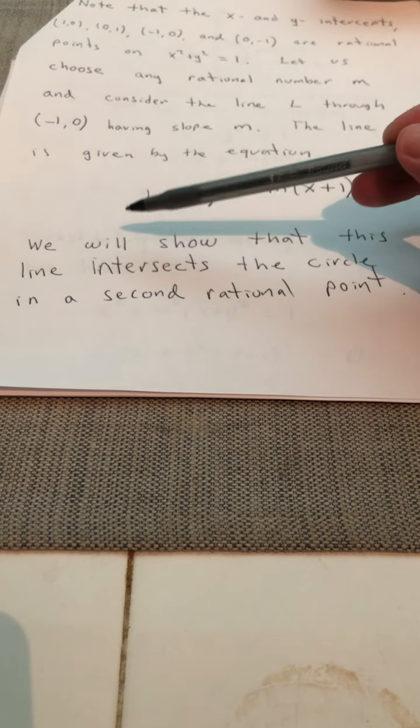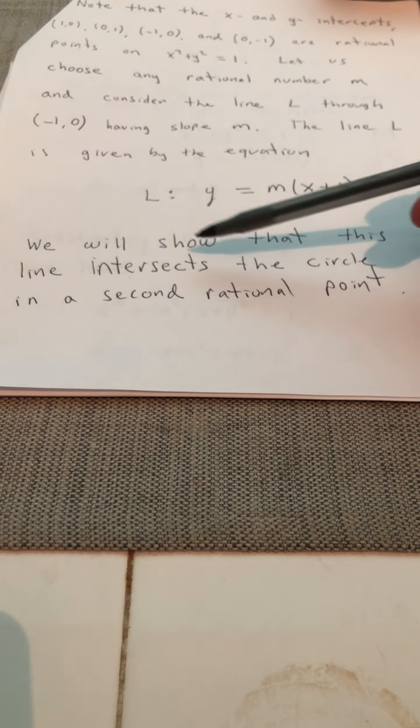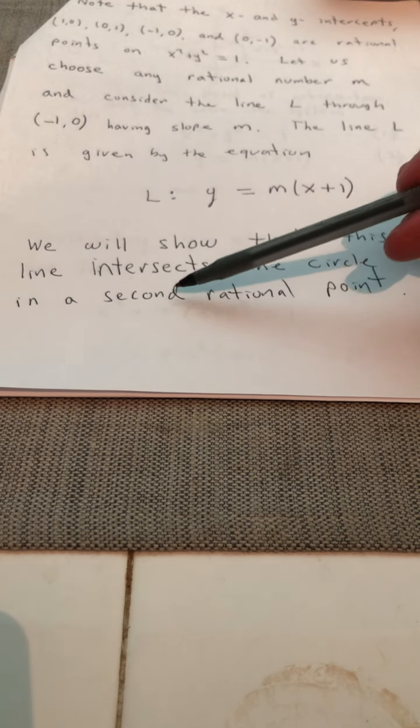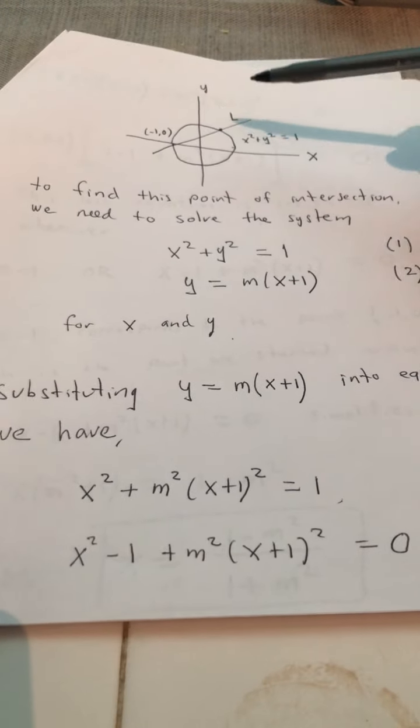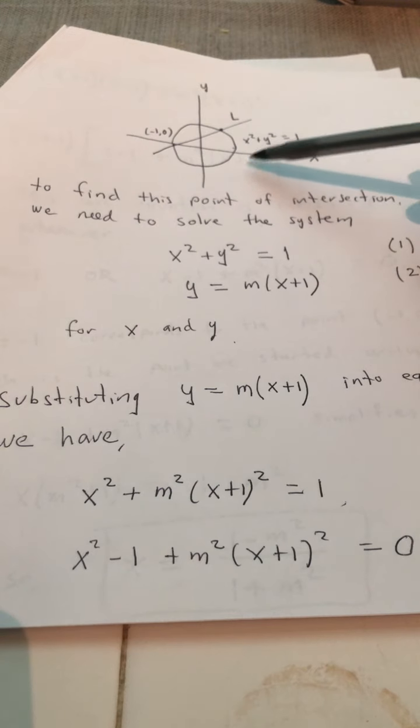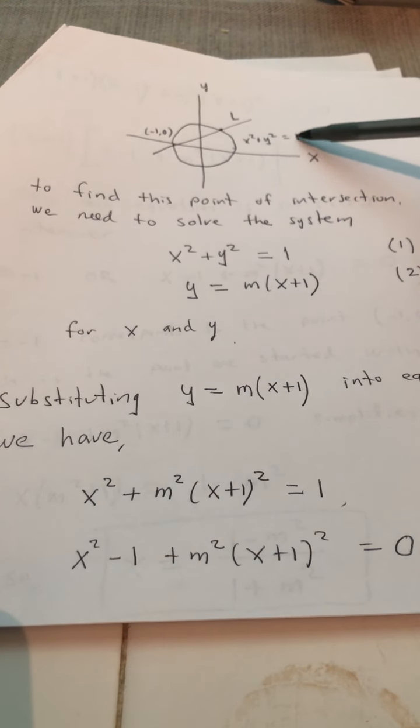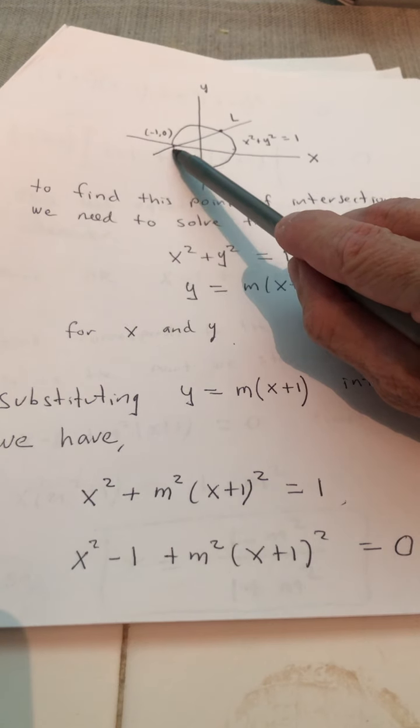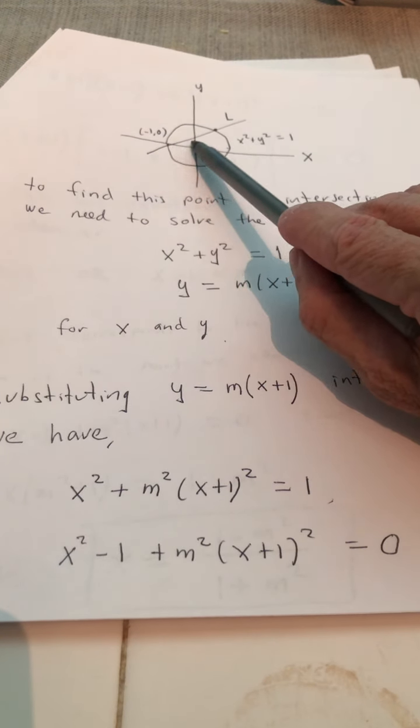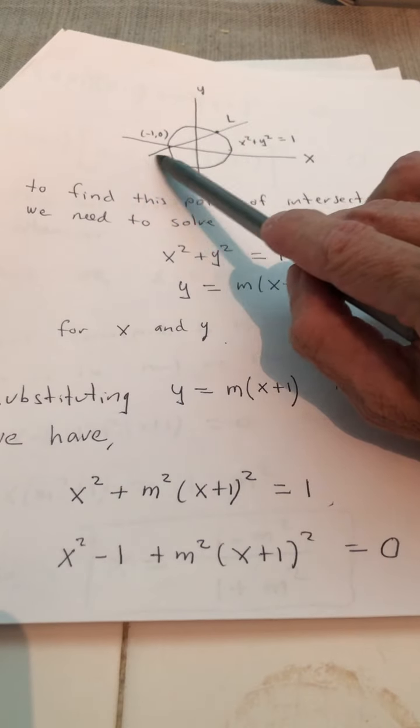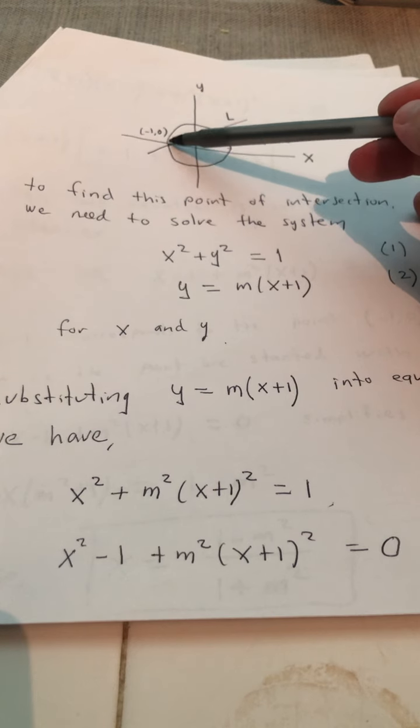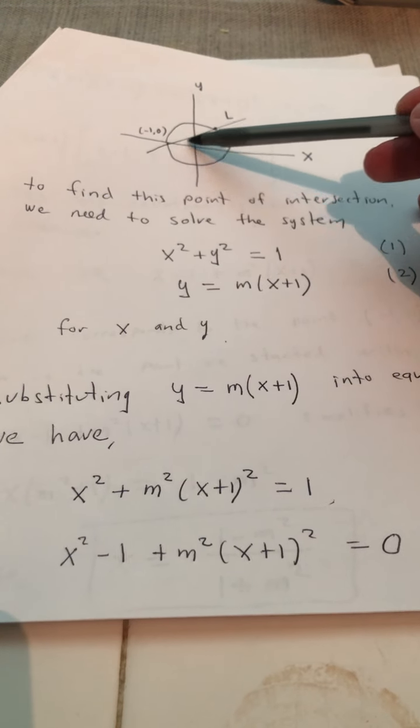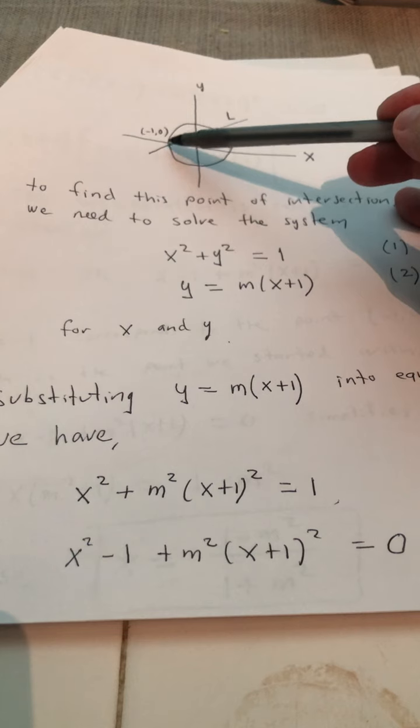So we will now show that this line intersects the circle in a second rational point. So it's helpful to draw a graph. So this is the unit circle x squared plus y squared equals one. And right here is the point negative one, zero. So I just drew one example of some line L. You see that as m changes, we could rotate this line about the point negative one, zero.